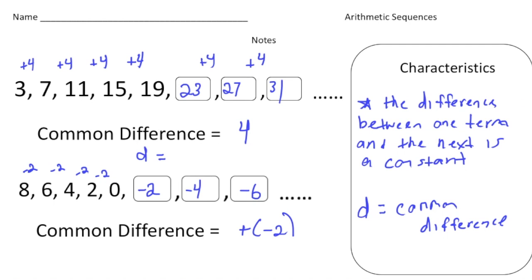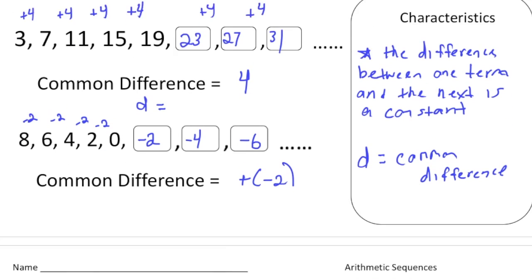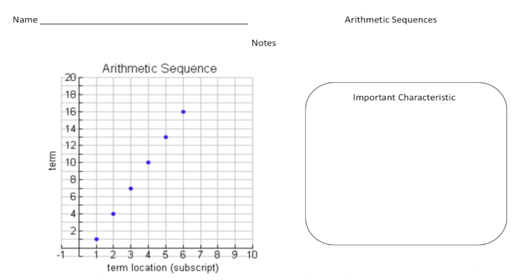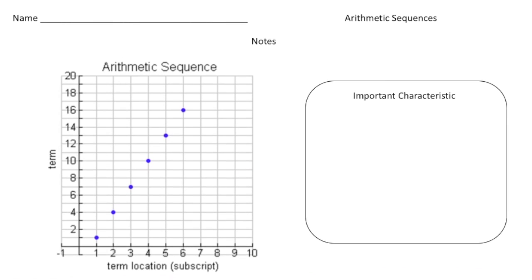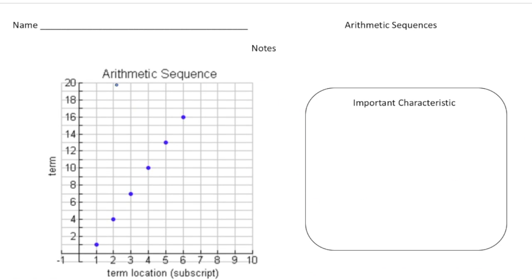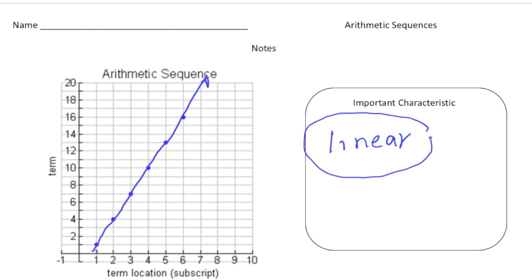Let's look at another major characteristic of arithmetic sequences. If you plot some points of an arithmetic sequence, you'll notice it makes a line. So arithmetic sequences are linear — that is a major characteristic of arithmetic sequences.